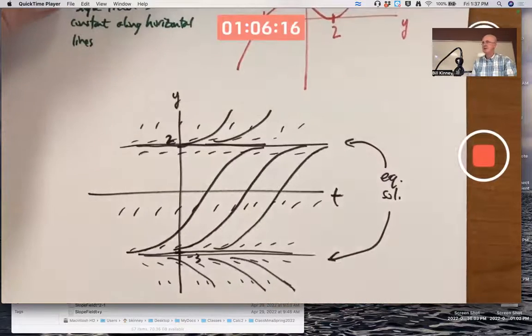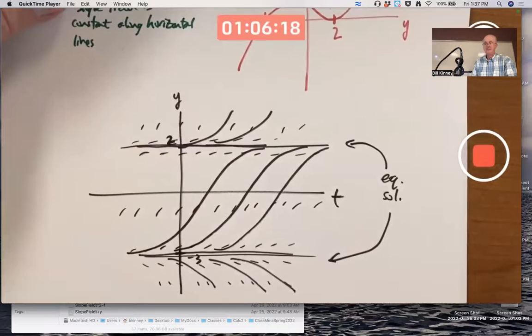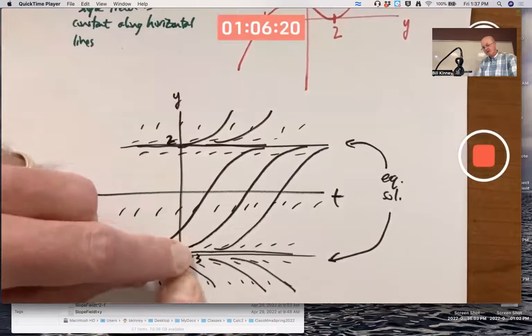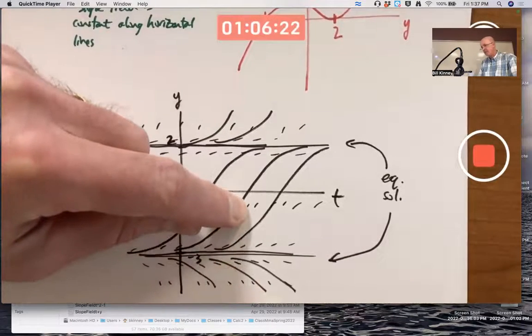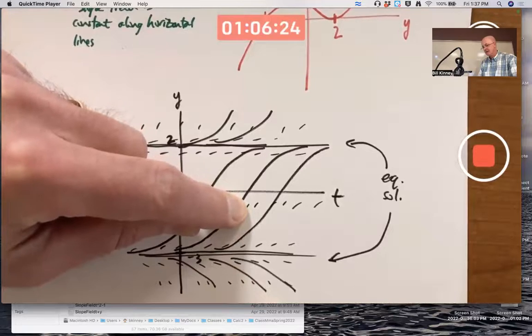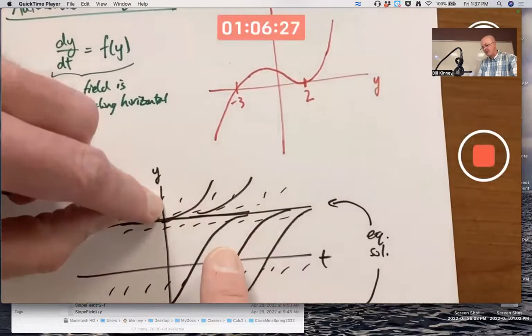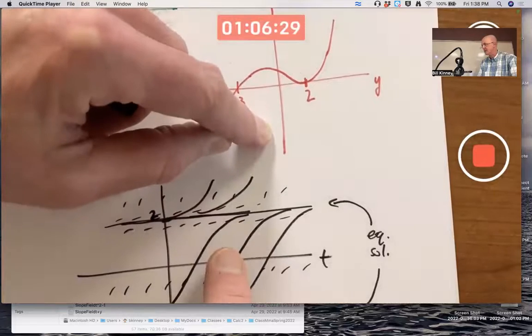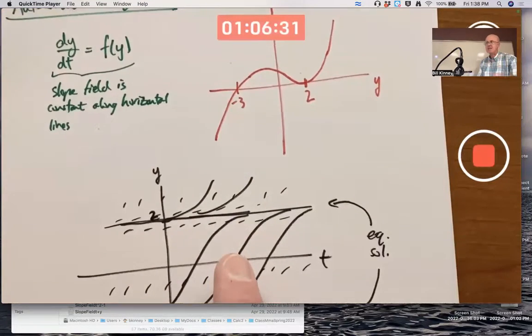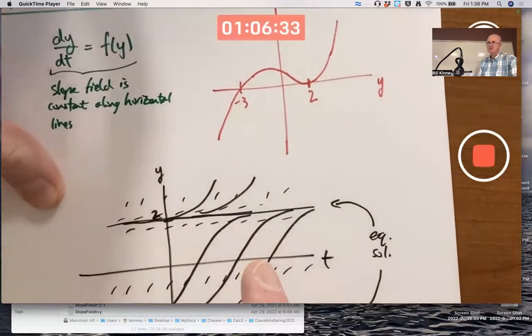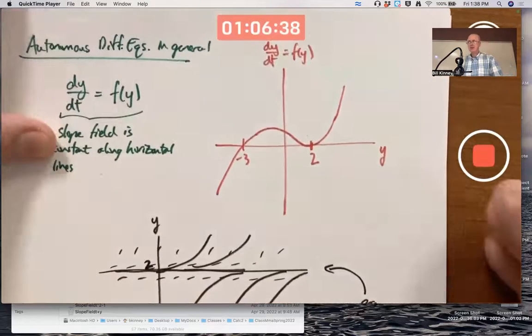Turns out both of these equilibrium solutions are technically unstable. This one because nearby solutions go away in both directions. This one is because solutions that start above it go away from it as t increases. So these are both not stable, they're unstable. Yes, this is a difficult thing for people.